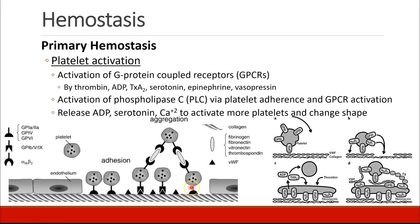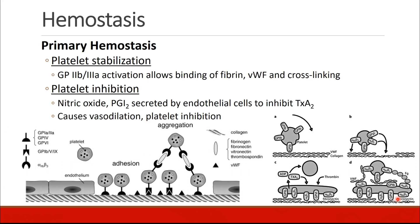The platelets then activate once they are attached to the subendothelium. There are G-protein coupled receptors that are activated by a variety of different substances. Phospholipase C is activated when the platelets adhere, and release of mediators including ADP, serotonin, and calcium leads more platelets to be activated and to change their shape into a flat form that starts to form the platelet plug. The platelets then get stabilized by glycoproteins called 2B3A, which allows fibrin and von Willebrand's factor to bind and make cross-linking.